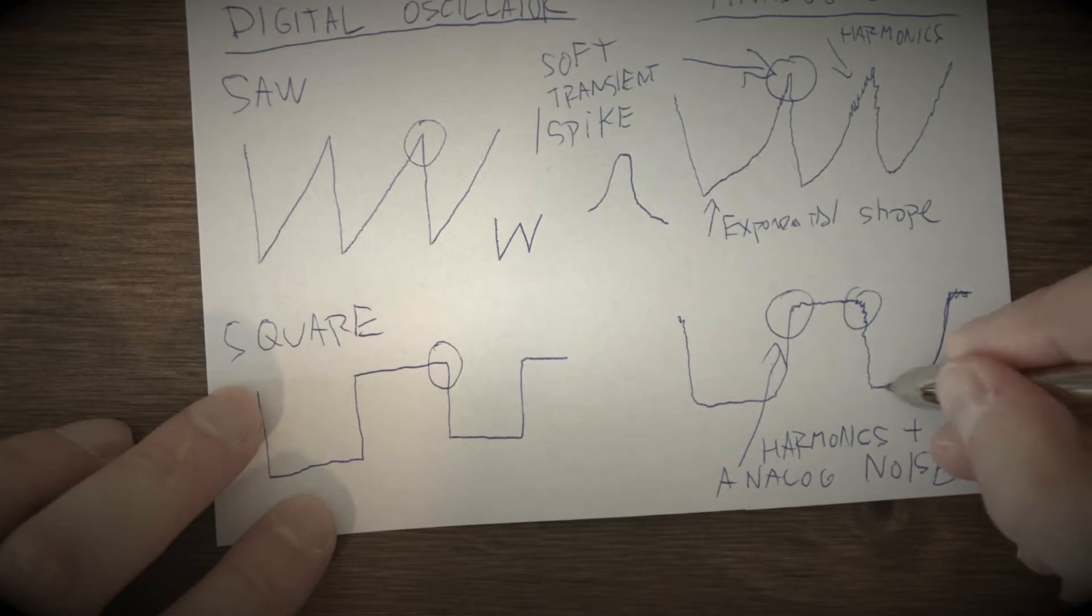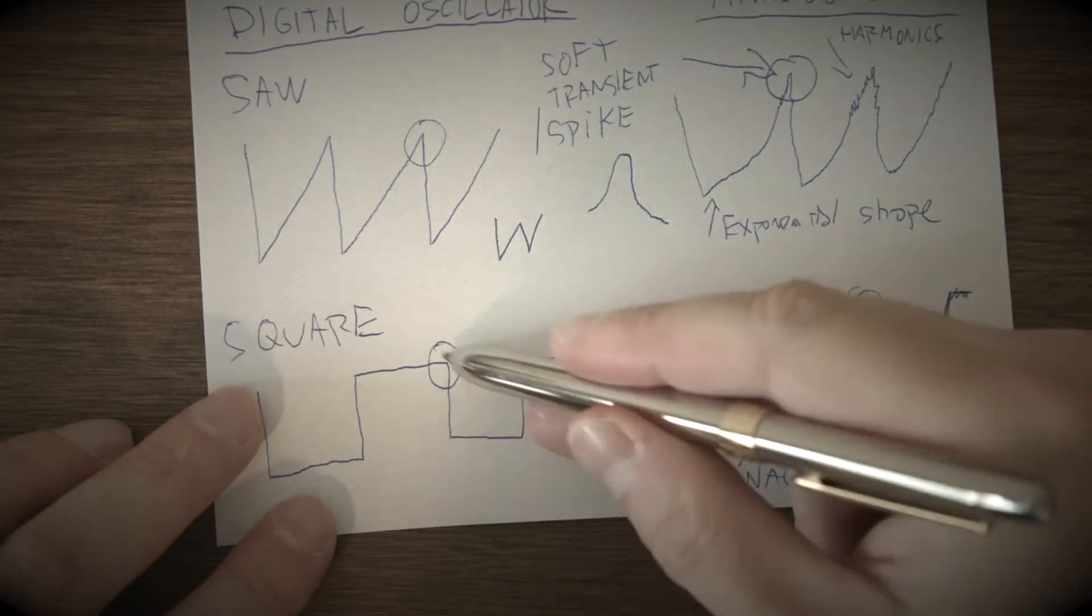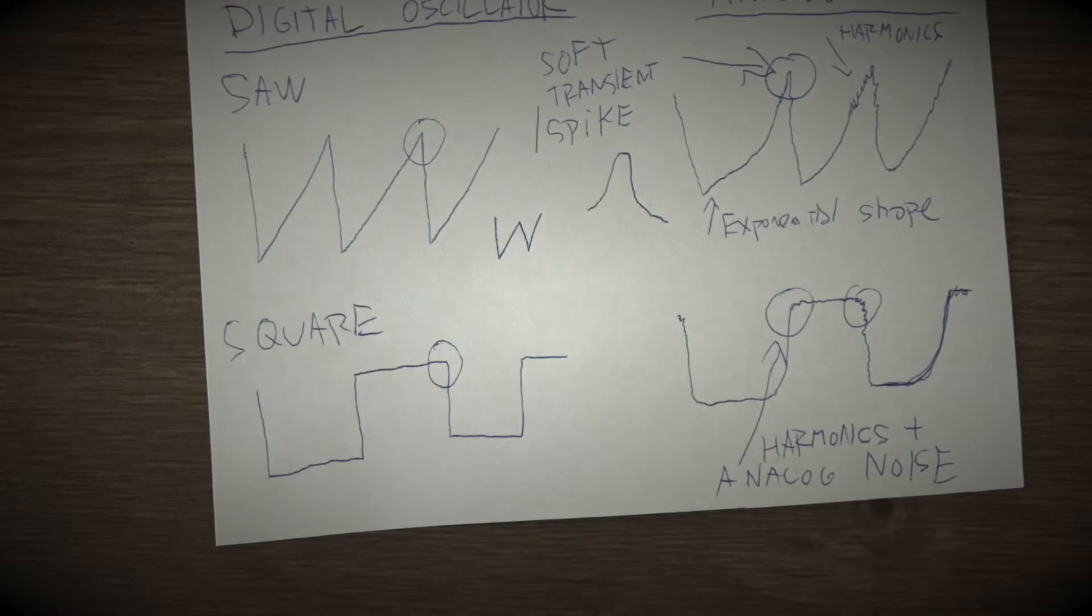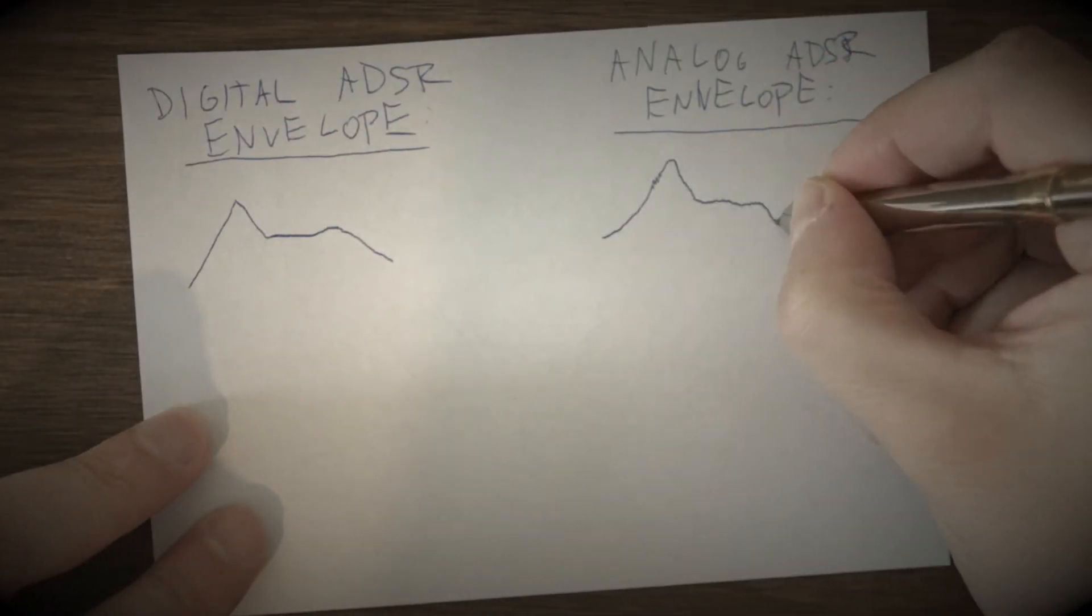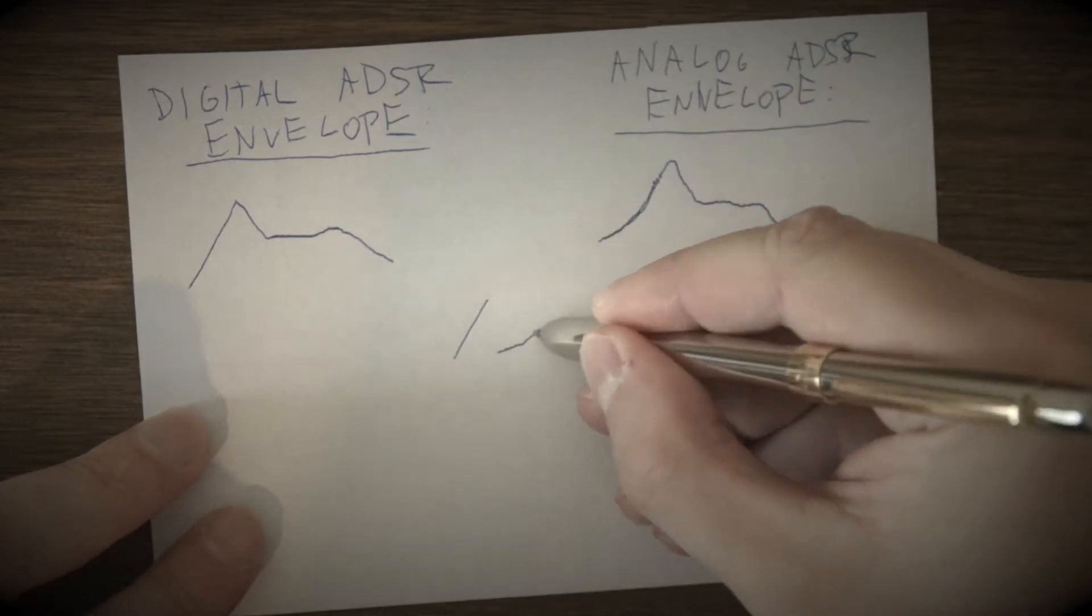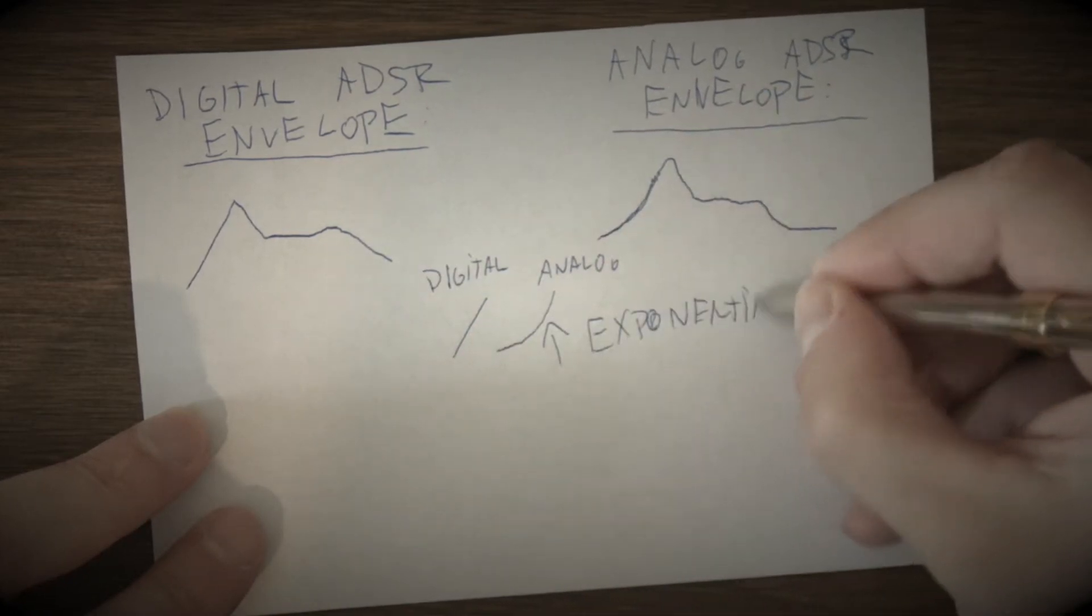Analog oscillator is changing its shape and tone in time, which makes natural, organic sound. Also amplitude envelope, modulation envelope, etc., is not linear. It has exponential shapes, spikes are not sharp, they are round.